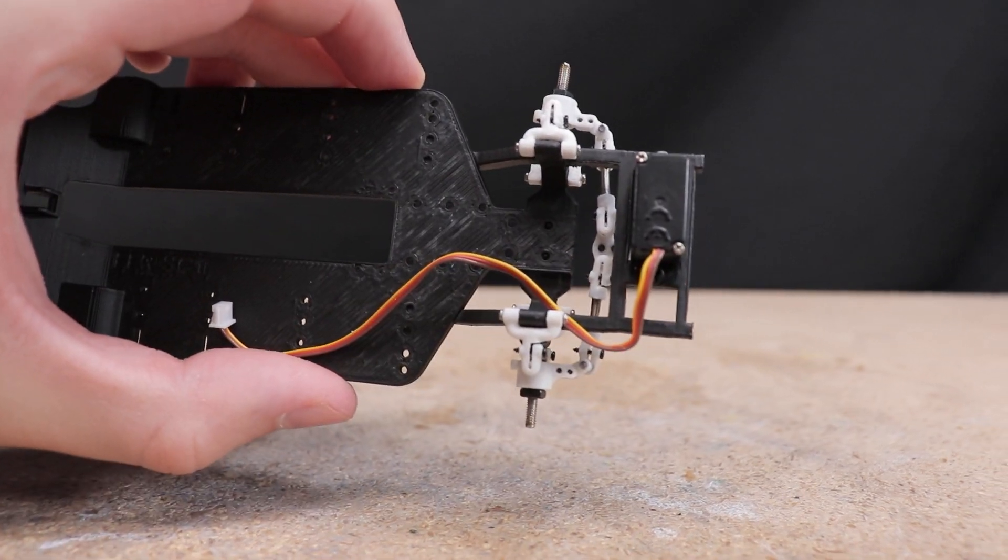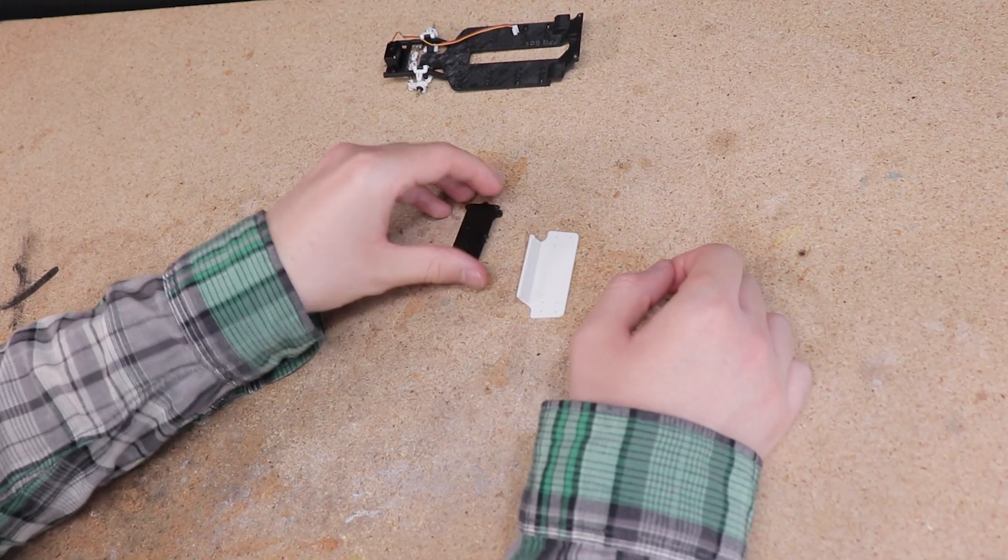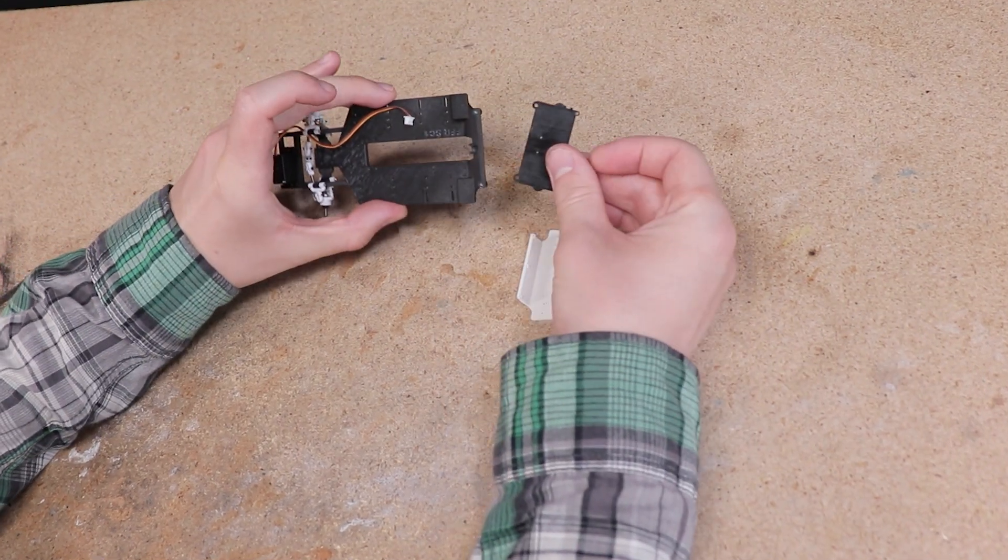With the front half of the chassis looking good I moved on to assembling the rear. I started by putting the rear piece and over axle pieces together and painted them matte black to match the rest of the chassis.